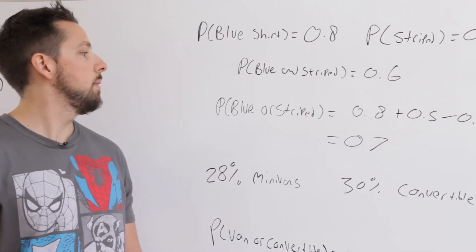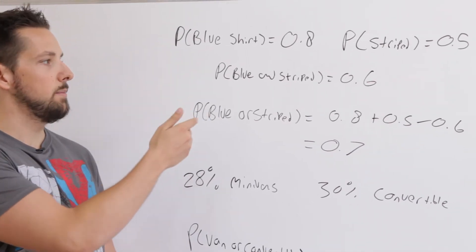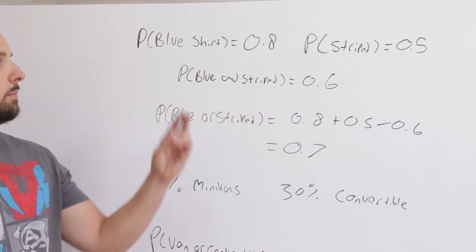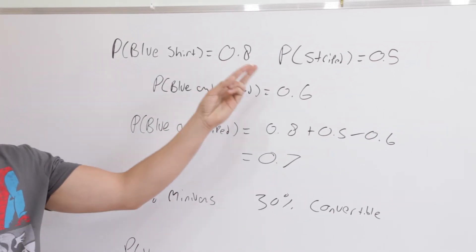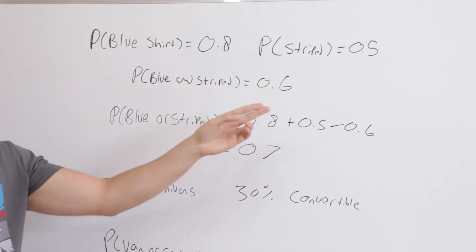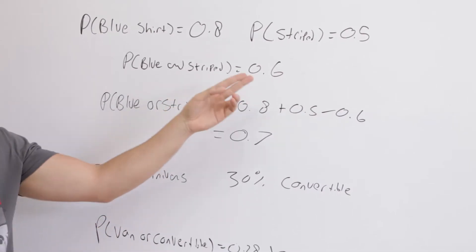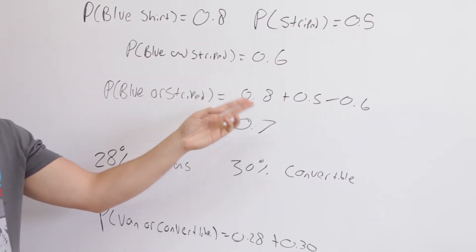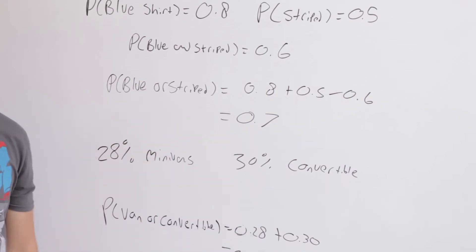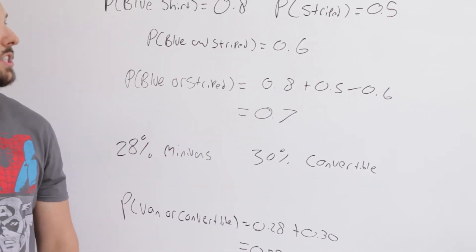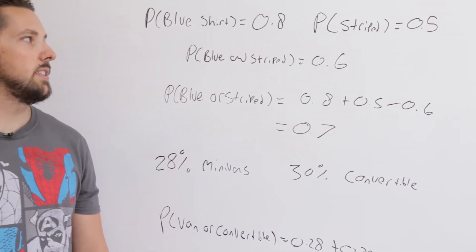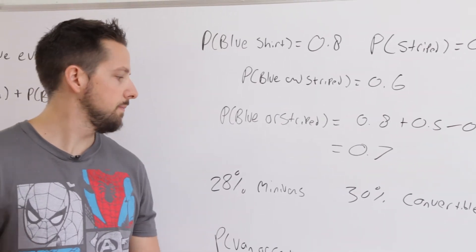To find the probability, we set it up so P(blue or striped) equals the probability of it being blue plus the probability of it being striped minus the intersection 0.6. So 0.8 plus 0.5 minus 0.6 equals 0.7. That means there's a 70% chance that a shirt you pick is either going to be blue or striped.